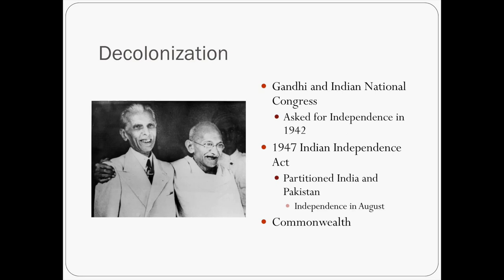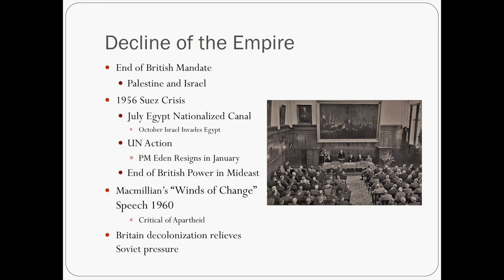Here's a picture of Gandhi on the left. Gandhi and the Indian National Congress were nationalists, and they wanted independence. They had begun asking for it during the war. After the war, the Indian Independence Act was finally approved by parliament, dividing India into two — India in the south and Pakistan in the north — and they celebrated their independence in August. They are still part of the Commonwealth at this time, but they are independent. India was once the jewel in England's crown, but now you start to see other colonies becoming independent as well.